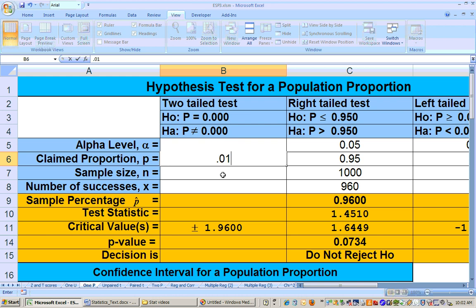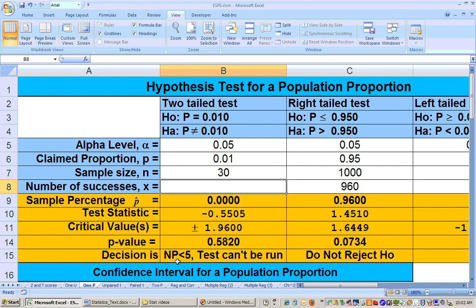let's say if this is 0.01 and you sampled 30 people, believe it or not, your NP is less than 5. If you take these two and multiply them together, you don't get something that's greater than or equal to 5, so the test cannot be run. That means that the data is not normally distributed, not approximately normal, so you can't run it.